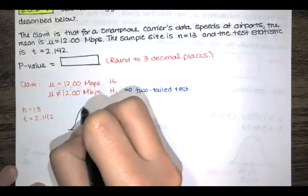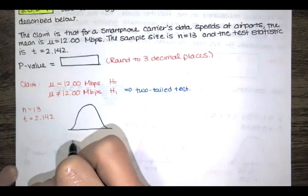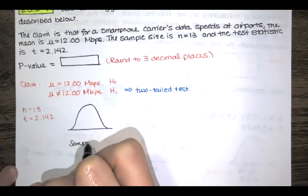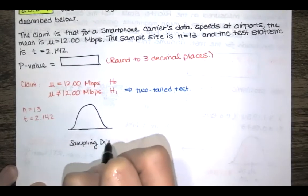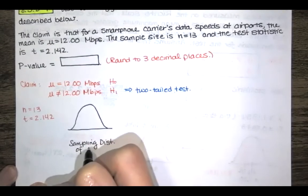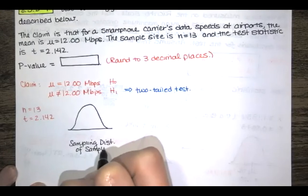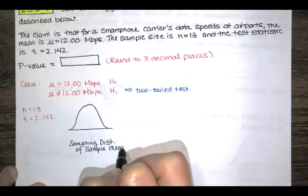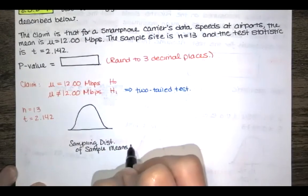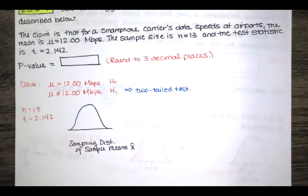But here's the idea. We've got some sampling distribution of sample means. So we find a whole bunch of samples of size n equals 13 and every time we create a sample we compute the mean and then we do that over and over again for lots of different samples and then we look at the distribution of the sample means.